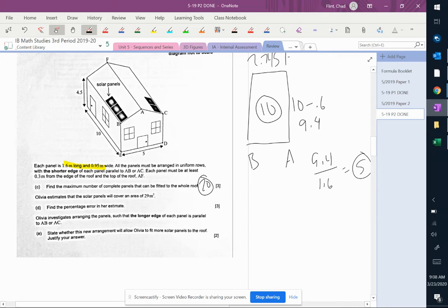So for the second part here, for D, I need to figure out the actual area of 20 of these solar panels. The area of one of them is 1.6 times 0.95, and we need to make sure that we do 10 of them. So we're just going to multiply it by 10.